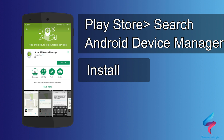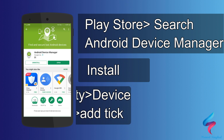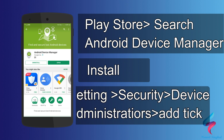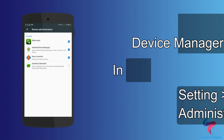After installing, go to your mobile settings. Here you have to go to Security and then Device Administration. Check if there is a tick on Android Device Manager or not. If not, then tick it.